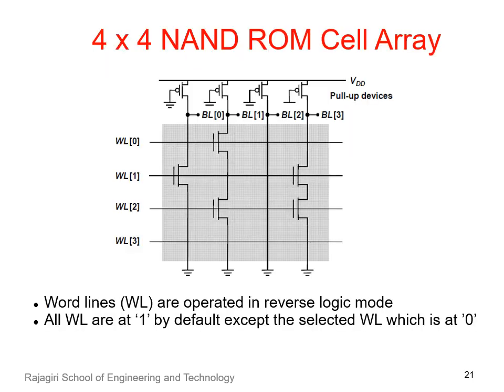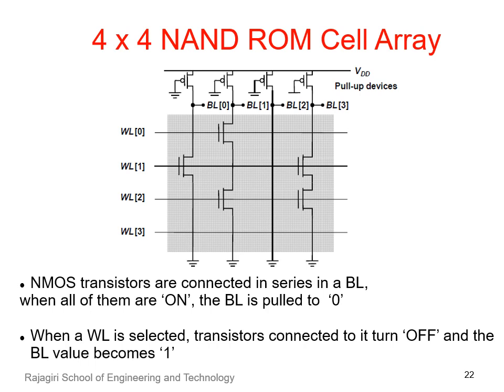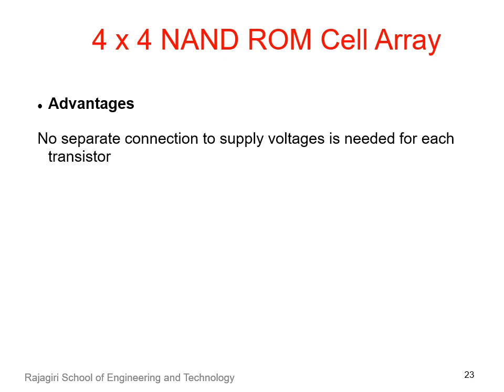In this ROM cell array which uses NAND logic, the word lines are operated in reverse logic mode. That is, all the word lines are at 1 by default, and when a particular word line is selected or enabled, it has to be turned to 0. Here, NMOS transistors are connected in series in a bit line. So when all of them are on, the bit line is pulled to 0. When a word line is selected or enabled, transistors connected to it turn off and the bit line value becomes 1. I hope that with this, you are familiar with the OR, NOR, and NAND implementations of ROM cell array.